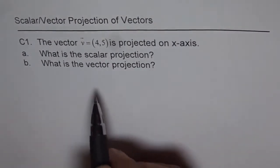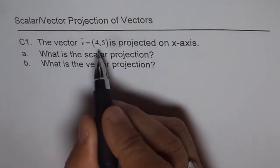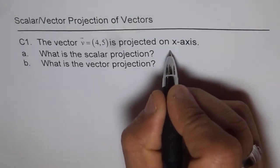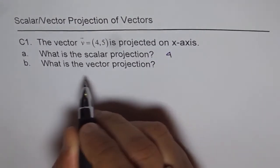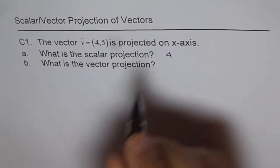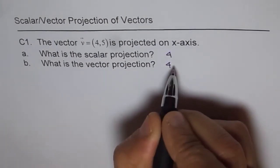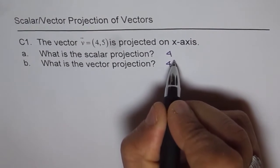The scalar projection of this is the x component which is 4, and the vector projection is also the x component 4 but it is in the direction of x-axis so it is 4 unit vector i.